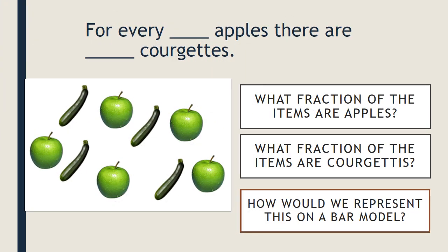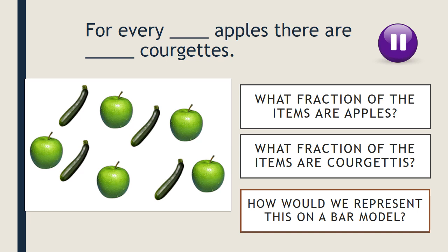We're going to do a quick recap of yesterday's lesson. We talked about ratio language — phrases like 'for every there is' — and what that means and how we could write that as a ratio. If you have a look on the screen you'll see some apples and some courgettes. I'd like you to pause the video and have a go at completing the sentence shown on screen as well as answering the three questions.